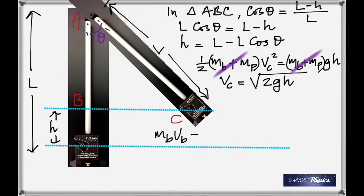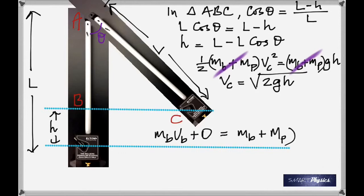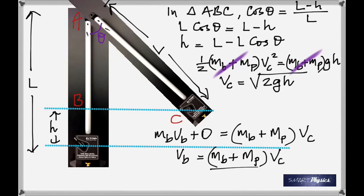Now apply conservation of momentum. The initial momentum is the mass of the ball times the velocity of the ball — which is what we're trying to find — plus the initial momentum of the pendulum, which is zero. That equals the total mass times the common velocity. So you can solve for v_ball.